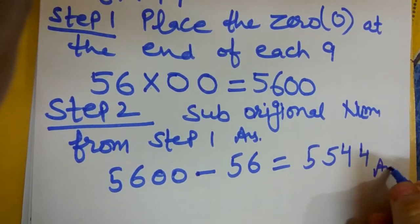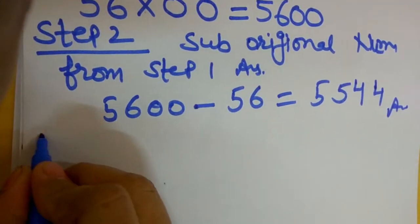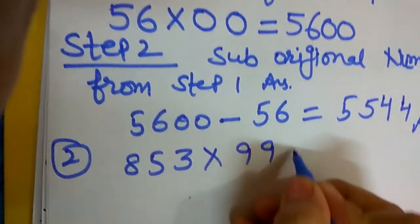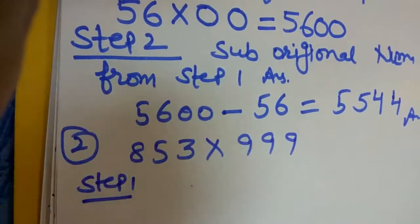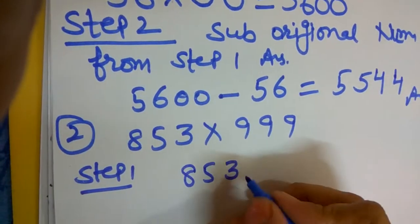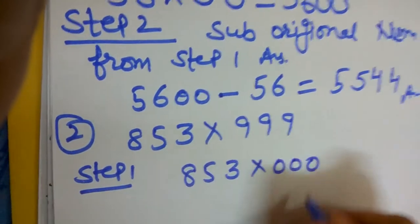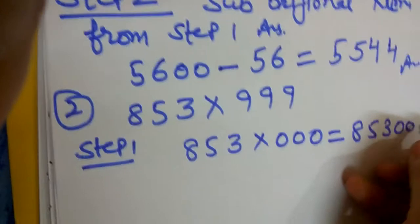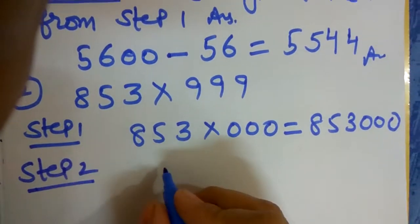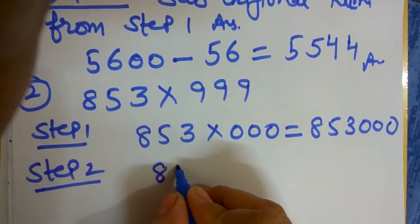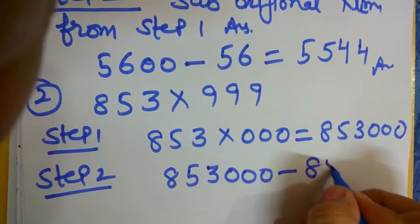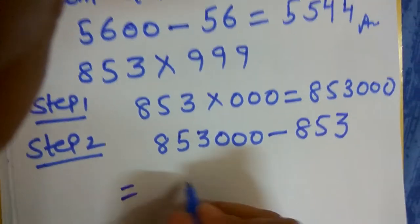Let's try another example: 853×999. Step one, place the zero at end of each nine, is equal to 853000. Step two, 853000 minus 853. Now our answer is 852147.